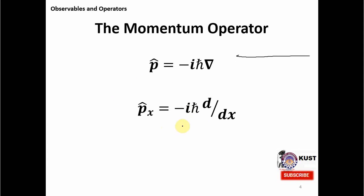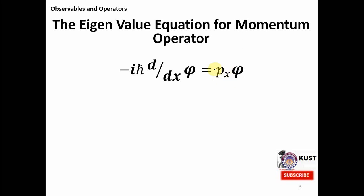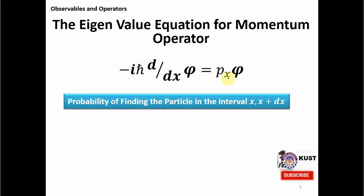Once we have the operator defined for linear momentum, we construct its eigenvalue equation. This eigenvalue equation comes from this operator acting on the eigenfunction and producing the eigenvalues of linear momentum — the values which a quantum mechanical system can have. For example, a single particle such as an electron can have these linear momentum values; one of them will be possible, not all of them. So linear momentum is quantized in this way.